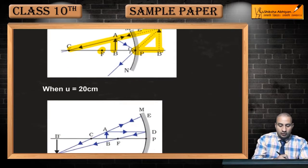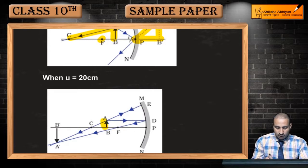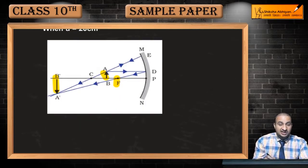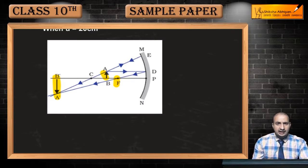Or jab wo hogi center of curvature aur focal length ke beech mein, tab image kaisi banegi? Image jo banegi wo banegi beyond C, beyond C banegi. Real, inverted or magnified size ki banegi. Utha yahaan par diagram bana lenge.